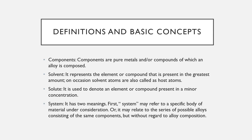Components are pure metals and compounds of which an alloy is composed. Solvent represents the element or compound that is present in the greatest amount. Solvent atoms are also called host atoms. Solute is used to denote an element or compound present in a minor concentration. System has two meanings: it may refer to a specific body of material under consideration, or it may relate to a series of possible alloys consisting of the same components.